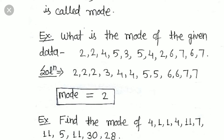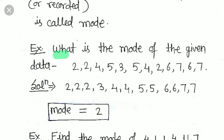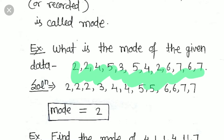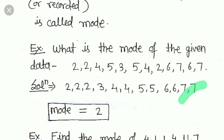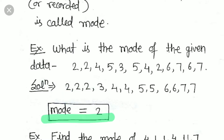Here is an example: what is the mode of the given data: 2, 2, 4, 5, 3, 5, 4, 2, 6, 7, 6, 7? Arranging the frequencies: 2 appears 3 times, 3 appears 1 time, 4 appears 2 times, 5 appears 2 times, 6 appears 2 times, and 7 appears 2 times. The value 2 appears the maximum number of times — 3 times — so the mode of this data is 2.